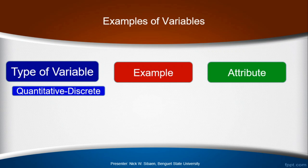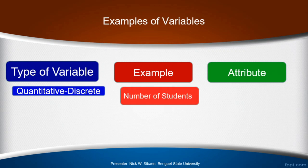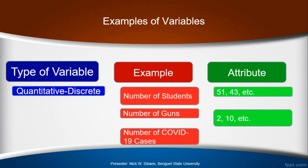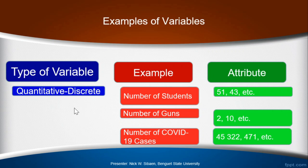Examples for quantitative discrete variables: number of students, with possible attributes of 51 or 43 students. Number of guns — 2 guns, 10 guns, or other possible values. Number of COVID-19 cases — 45,322,471 cases, among other possible attributes. These are discrete quantitative variables; they are numerical, but decimal values are not meaningful because discrete variables are associated with count data — you are counting the number of observations for each variable.